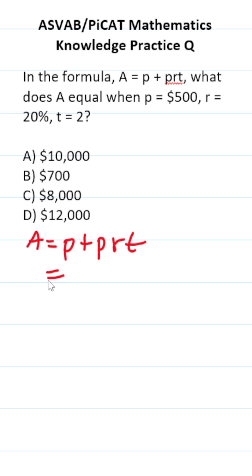So this is the formula to find the total amount in an account that has accrued some simple interest. Simple interest is I equals P times R times T, which is this part right here. We don't need to know that, but I wanted to point that out.